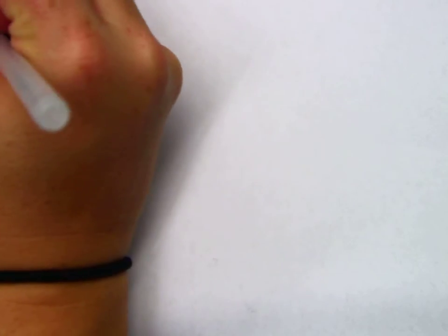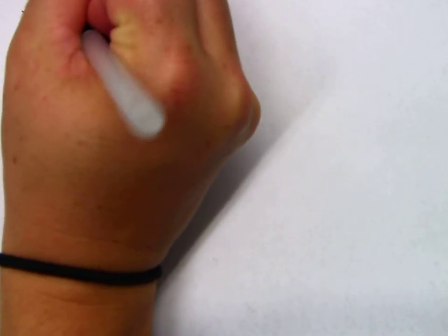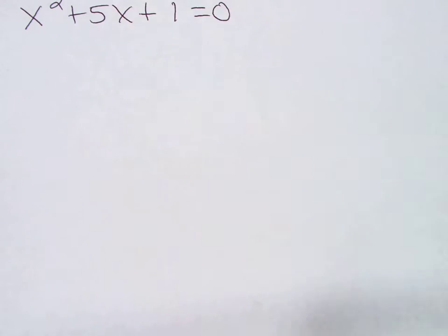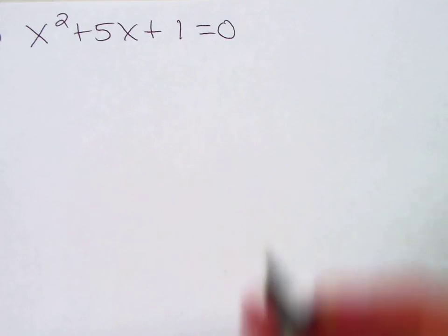Alright, number 5. X squared plus 5x plus 1 equals 0. Can you see what I just wrote? Okay. A, B, and C.